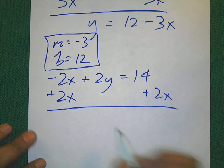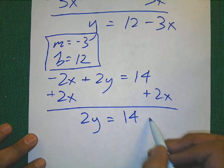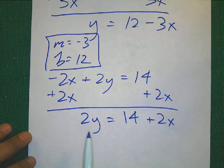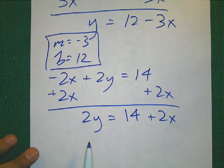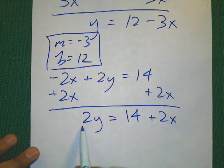If I do it to one side, I need to... Right. Do it to the other. Now, I have 2y equals 14 plus 2x. Y is not by itself right now. If that's 2 times y, what's the opposite of times?